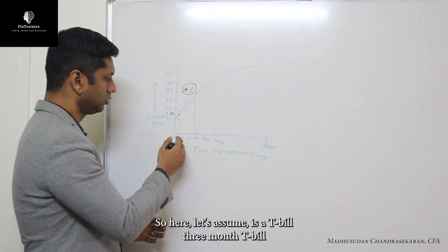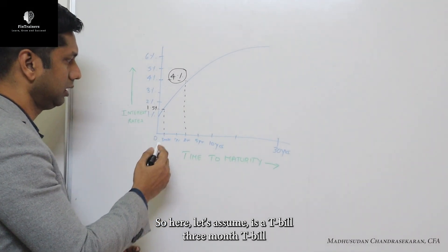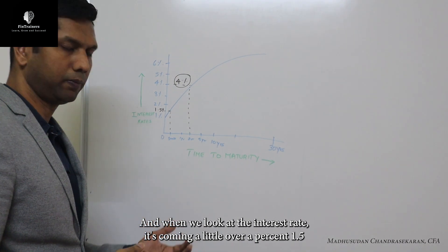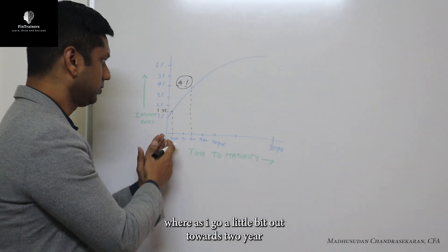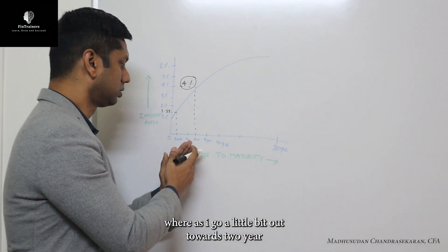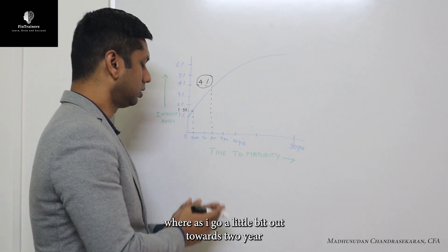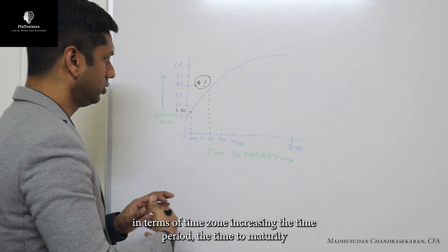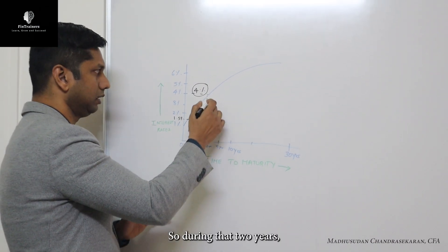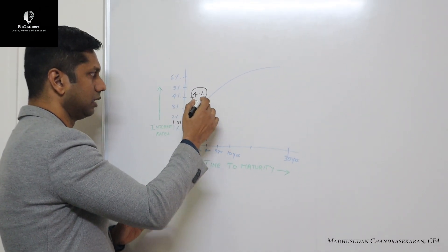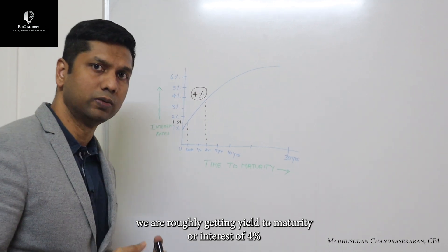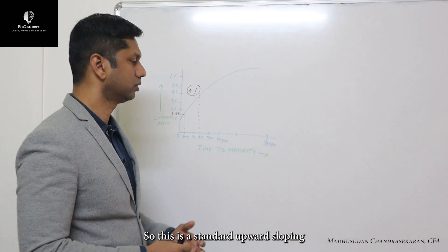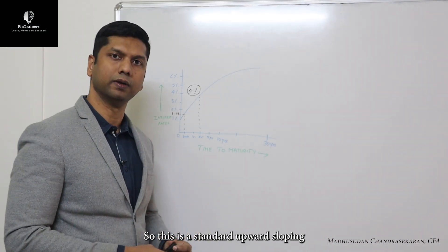Let's assume it's a T-bill — a three-month T-bill. When we look at the interest rate, it's coming in a little over one percent, about one point five. Whereas when I go out towards a two-year time horizon, increasing the time to maturity, during those two years we are roughly getting a yield to maturity or interest rate of four percent. So this is the standard upward sloping yield curve.